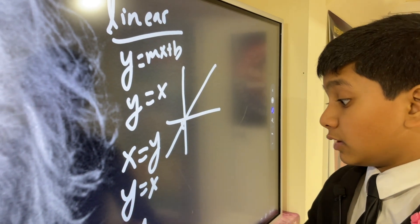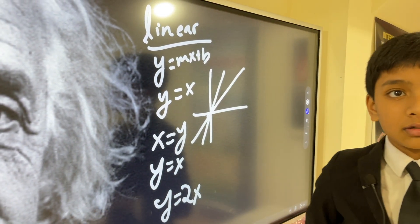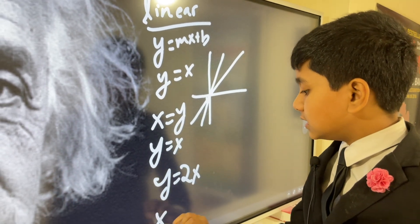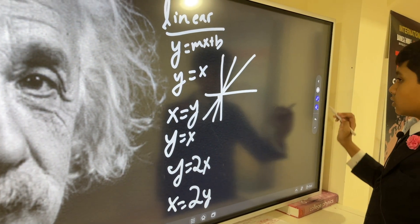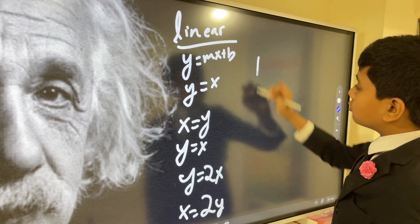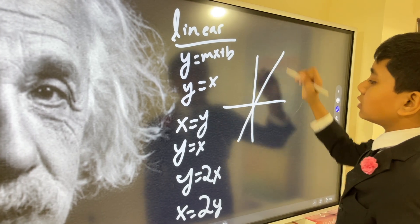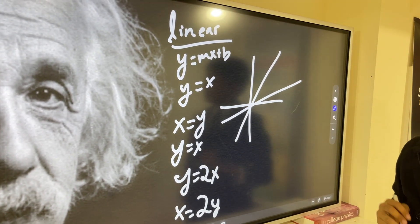Now, what about, say, y equals 2x? That's going to look like this. But, what about x equals 2y? Is that still a function? Yes, but it's not going to look like the same thing. y equals 2x is going to look like this, while x equals 2y is going to look like this.